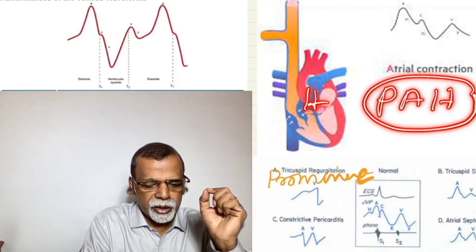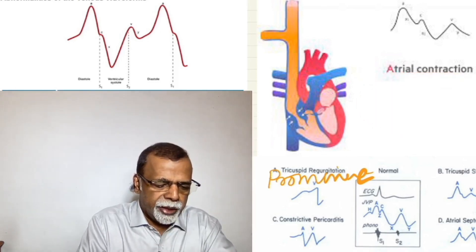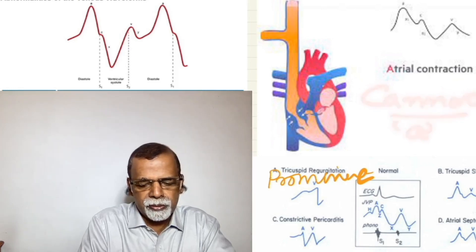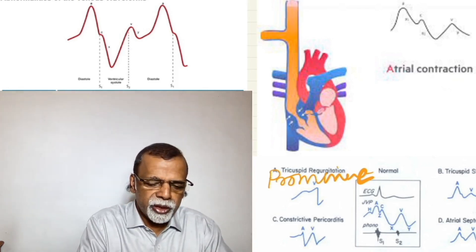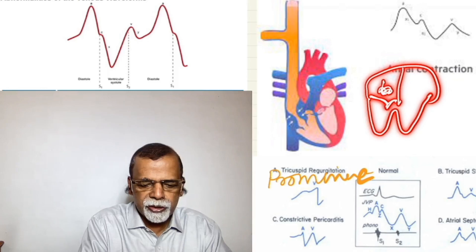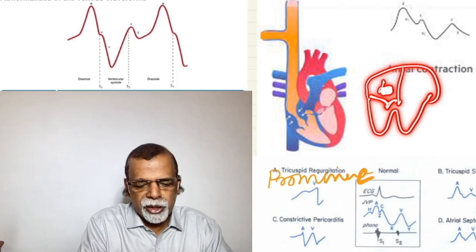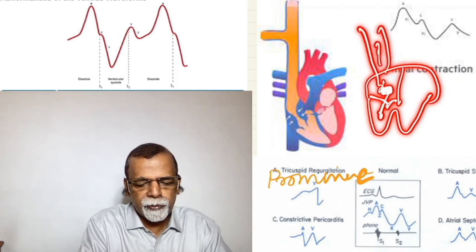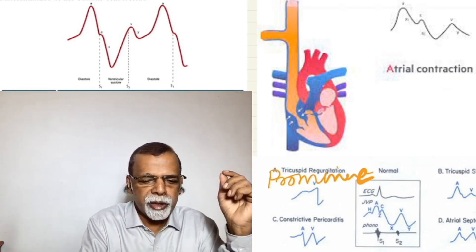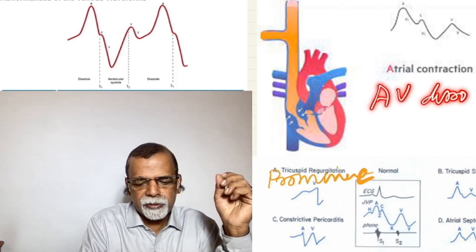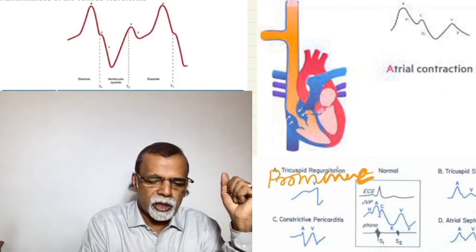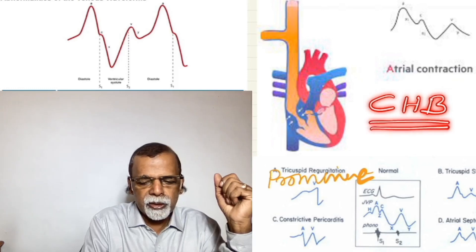Another important condition is the cannon wave or cannon A wave. A cannon wave occurs when the right atrium is contracting against a closed AV valve. When the AV valve is closed and the atrium contracts, blood cannot enter the right ventricle and can only go upwards, producing a giant A wave. This occurs when the atrium and ventricle are dissociated — the atrium contracts at its own rate and the ventricle at its own rate with no coordination. The typical condition is complete heart block, which produces cannon waves.